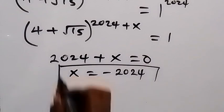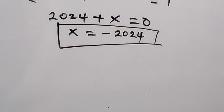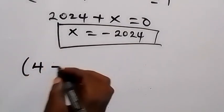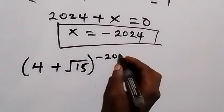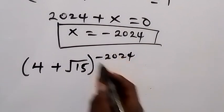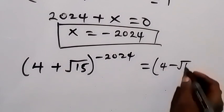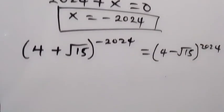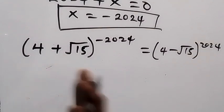We can also check whether this is correct from what we are given. Replacing x as minus 2024, the equation becomes 4 plus root 15 raised to power minus 2024, equals 4 minus root 15 raised to power 2024. We can write the left side — since it is raised to a negative power — as the reciprocal: 1 over 4 plus root 15, raised to power 2024.